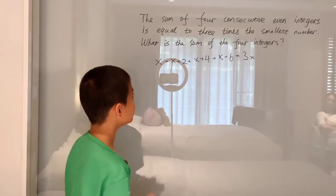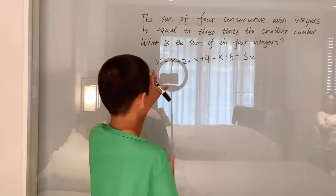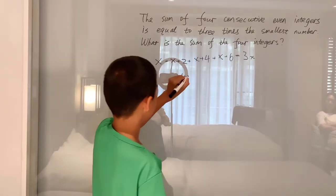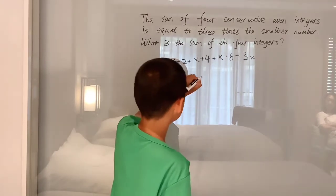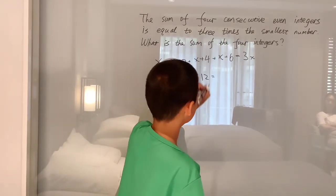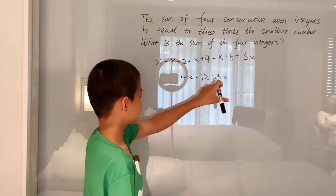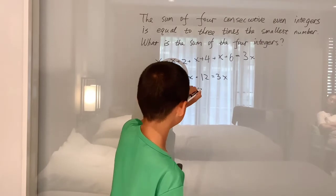We can understand this equation. First, we combine like terms on the left-hand side. There's one, two, three, four X's, so 4X plus 2 plus 4 is 6, plus 6 is 12, and 3X doesn't change. Subtracting 3X and subtracting 12 from both sides, you get X is equal to negative 12.